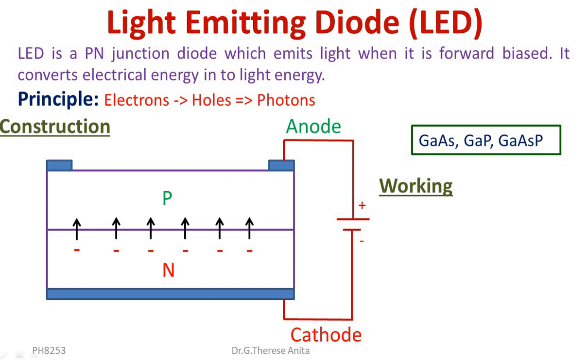In the P region, holes are available. When electrons recombine with the holes, they release energy in the form of light.